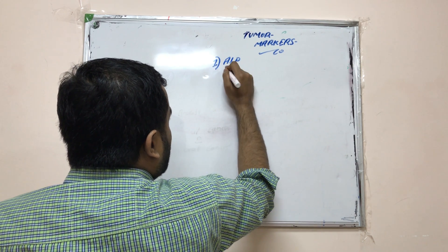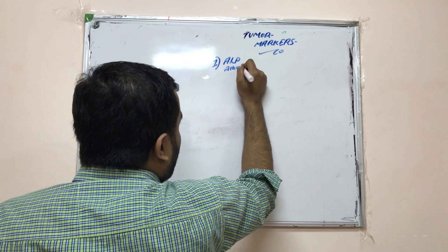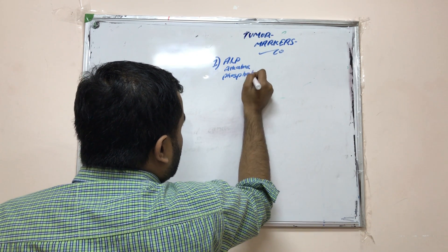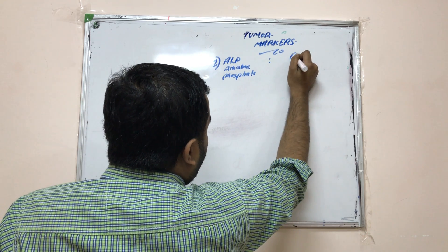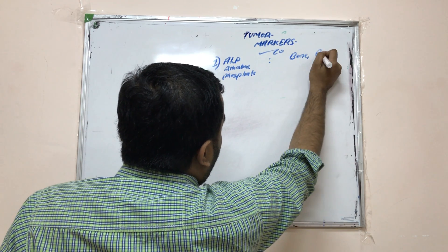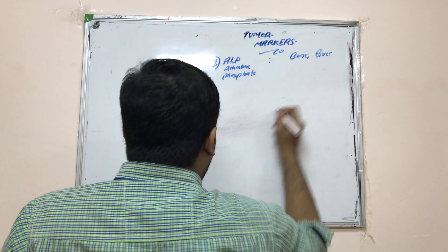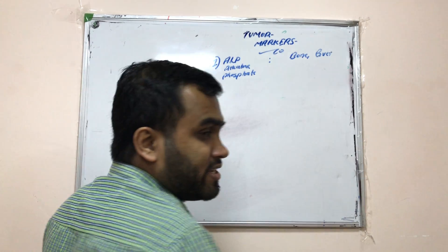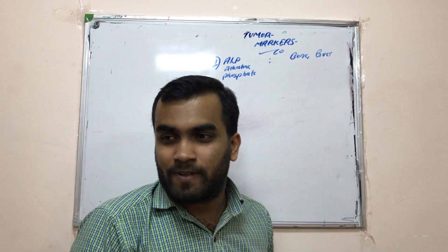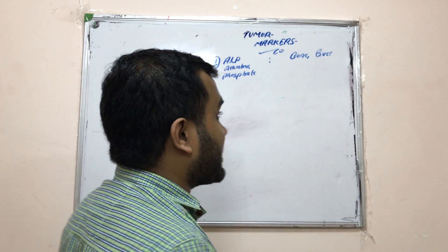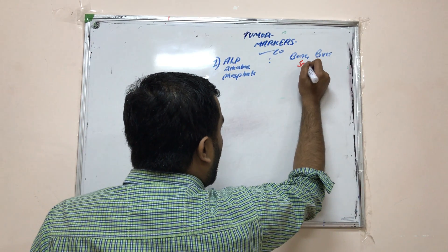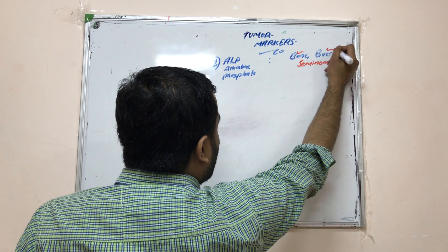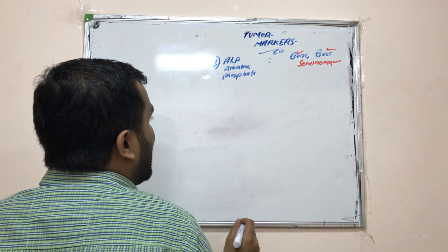The first marker is alkaline phosphatase (ALP). ALP is elevated in bone cancer, liver cancer, and seminoma. You may know Yuvraj Singh, our favourite cricket player — he had a cancer known as seminoma. So for bone cancer, liver cancer, and seminoma, we will see elevated ALP in the blood.